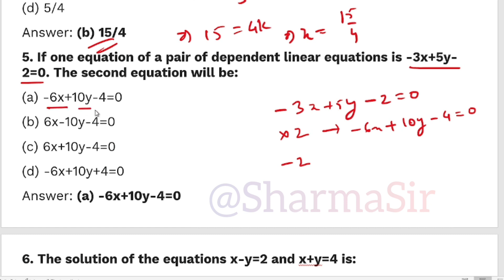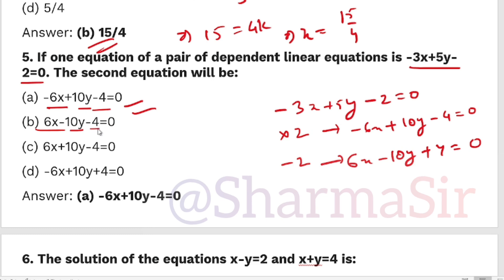If we multiply by -2 times, we get 6x-10y+4=0. So if the equation is 6x-10y+4=0, and checking the options for 6x-10y, this is the answer. Let's look at the next question.